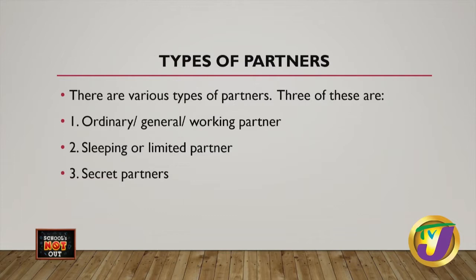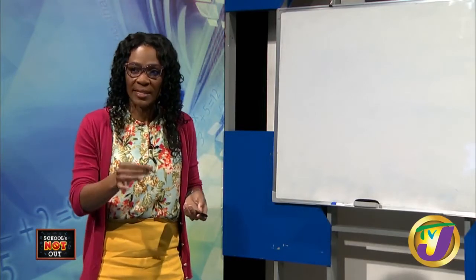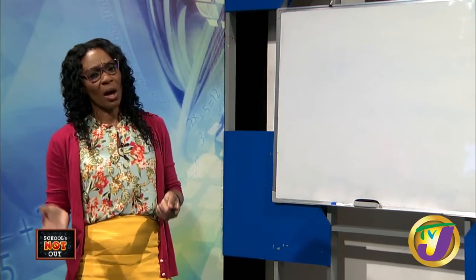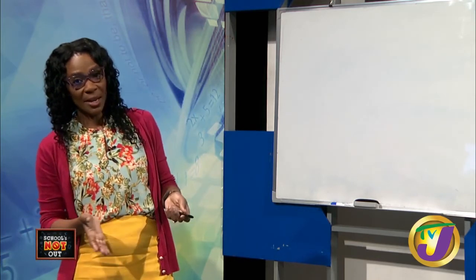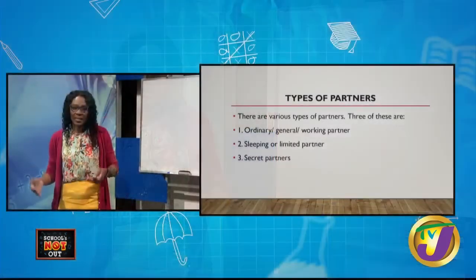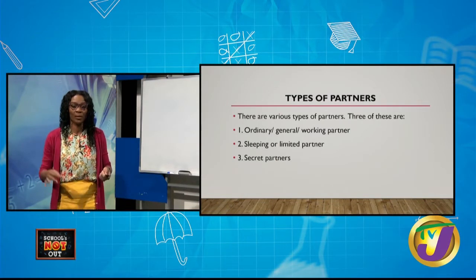There are different types of partners. We have three examples: one, the ordinary or general or working partner; two, the sleeping or limited partner; and three, the secret partner. The working partner is the one who invests in the business and is active every day. The sleeping partner has invested but is inactive in the day-to-day operations. The secret partner has invested in the business, but it is a secret to the public that this partner is part of the entity.